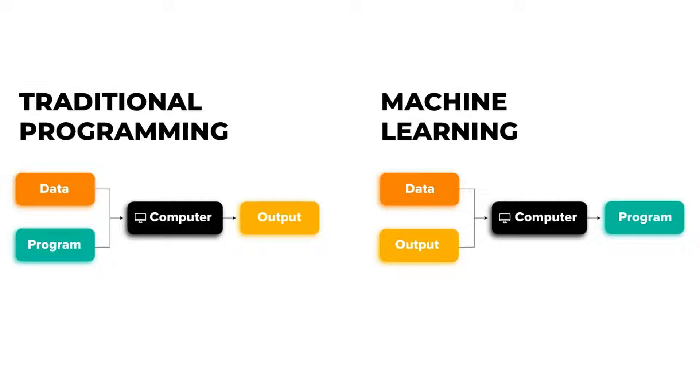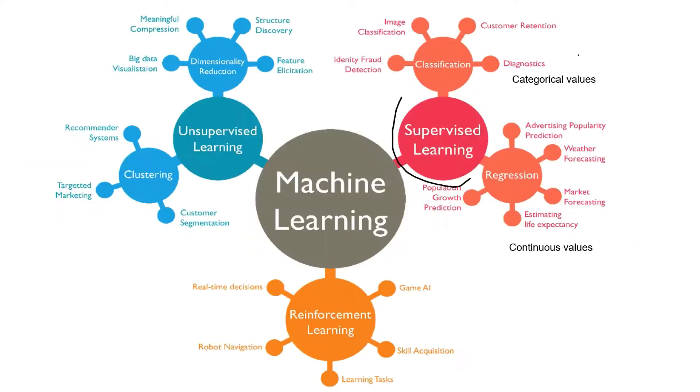The machine will understand the rules or the program hidden in the data by itself. Machine learning applications can be divided into three types: supervised learning, unsupervised learning, and reinforcement learning.